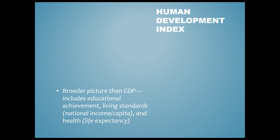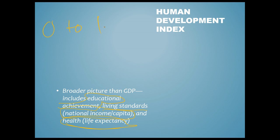The Human Development Index, or HDI, measures how developed a society is and what it's like to live there — a much broader picture than GDP alone. It includes living standards measured as national income per capita, educational achievement, and health or life expectancy. This is intended to give a fuller picture beyond just a dollar value. It's measured on a scale of zero to one, and you'll typically see it expressed as country rankings — from number one down to around 173 countries.